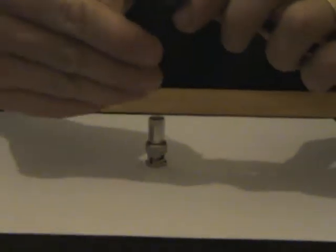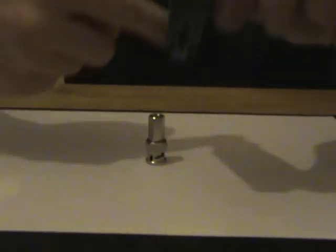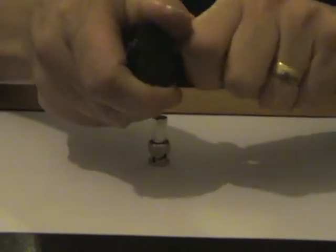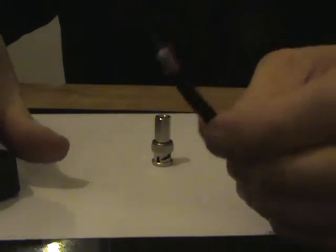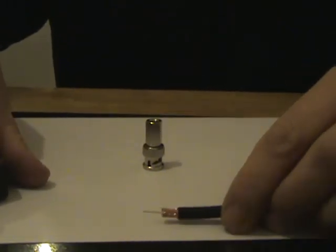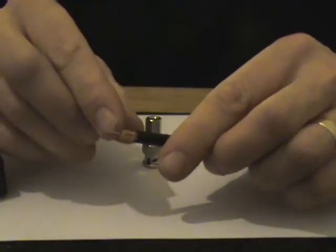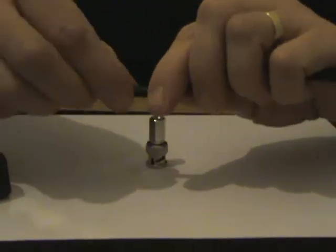The simplest thing to do is use one of these tools where you can just twist the stripper around. It will automatically expose the correct amount of center conductor and the outer as well.